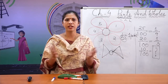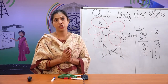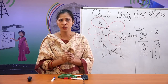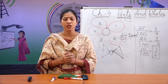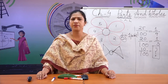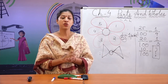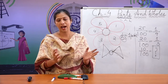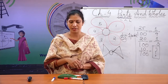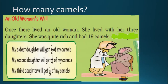The daughters were very confused — how would they divide 19 camels? 19 is not an even number. They cannot divide it by two. Were they going to cut the camel? Then their aunt, a very clever lady, came and said: give me five minutes, I will divide. She had one camel of her own, so she added it to the 19 camels, making 20 camels total.